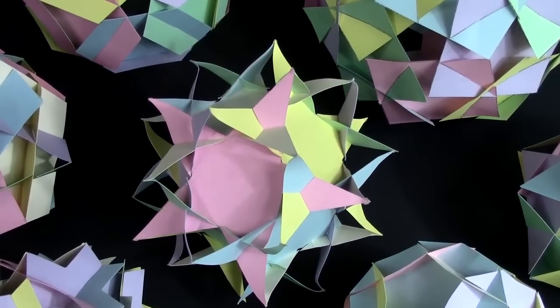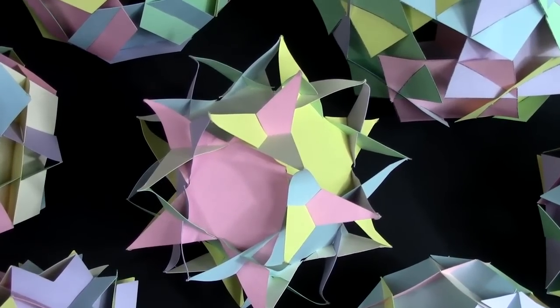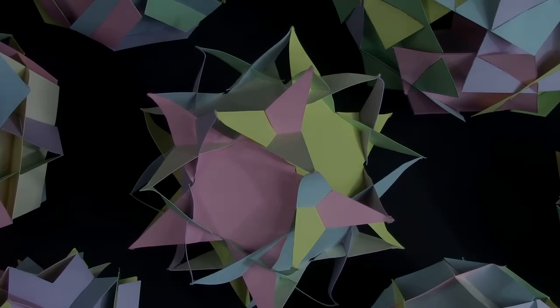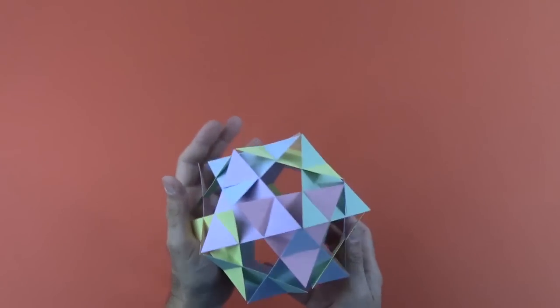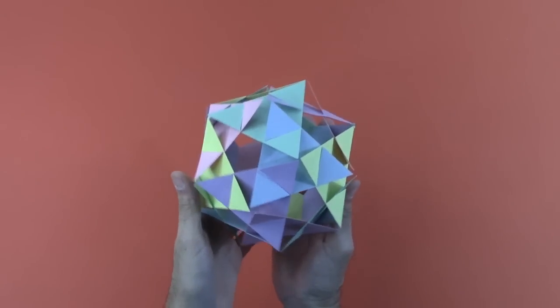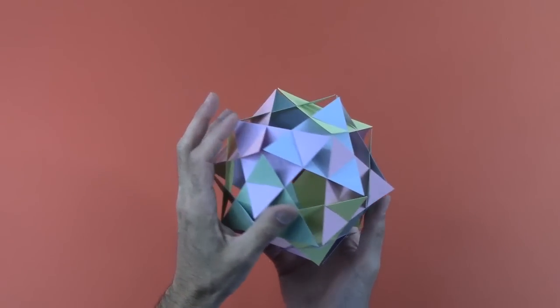Each is made from one kind of regular polygon with slots on them for assembly. The first one is made from 20 equilateral triangles of five different colors.